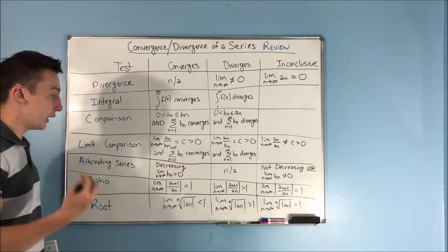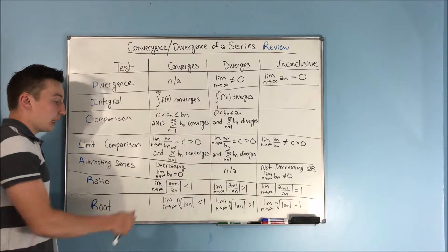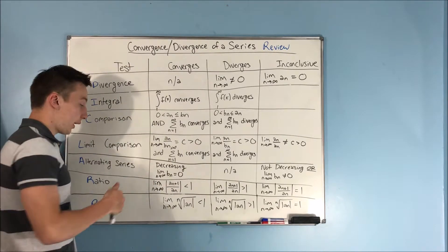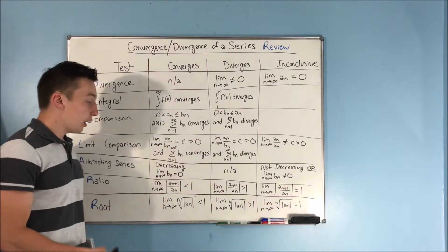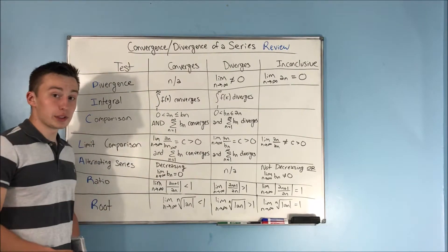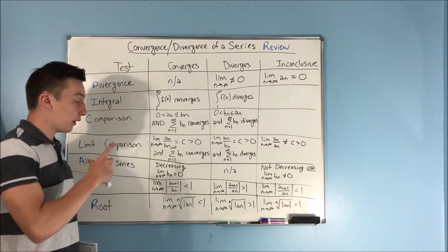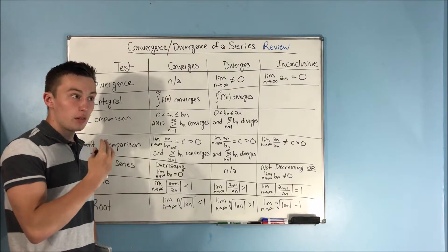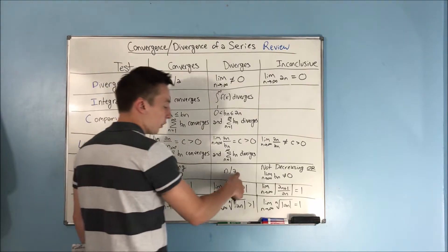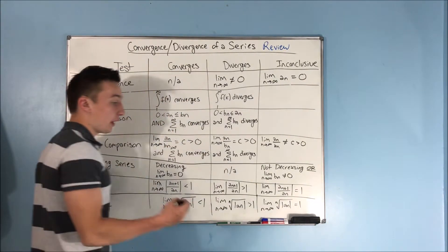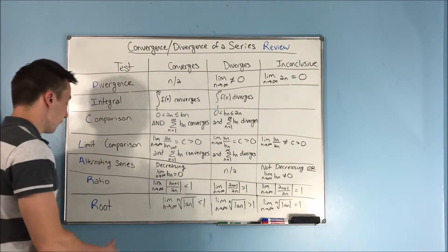For alternating series, the alternating series test proves convergence. If you have an alternating series that is decreasing, and the limit as n approaches infinity of b sub n equals zero, then you know that this series converges. Your b sub n here is obtained by taking out the part that makes it an alternating series. You don't prove divergence with this — if it's not decreasing or that limit does not equal zero, then it's inconclusive and you go to another test.